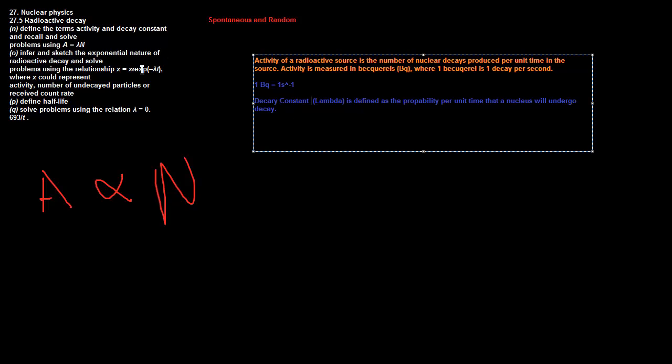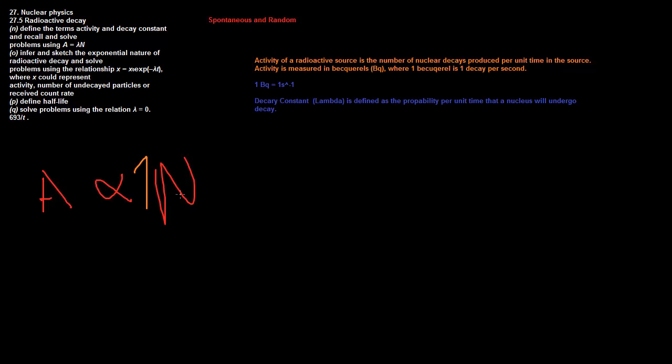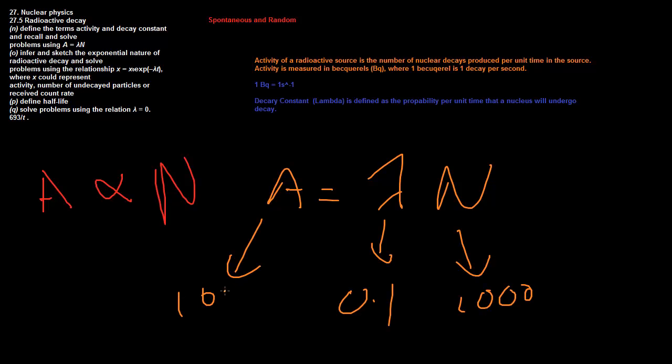If the decay constant... remember if there was a hundred, if A equals a hundred, if there was a hundred decays and there's a ten percent chance each, the ten percent would be the lambda constant. So if the lambda constant would be equal to 0.1 for ten percent. So the formula is this: activity equals decay constant lambda times N. And this is just mathematical. If this is equal to ten percent, which is 0.1 as a decimal, and the number of particles is equal to a thousand, that means the activity will be, on average, equal to a hundred. You can see this is how it's related. It's very simple.